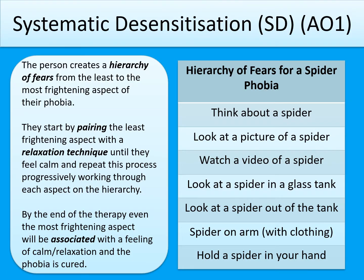The first treatment is called systematic desensitisation. 'Systematic' means that you do something in an order that makes sense, and 'desensitisation' means that you are going to become less sensitive — or not sensitive at all — to the thing you used to be extremely scared of. The first thing the person does is create a hierarchy of fears, going from the thing they're least scared of to the thing they're most scared of in a systematic order.